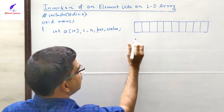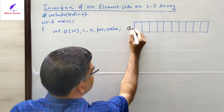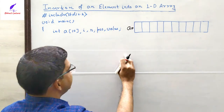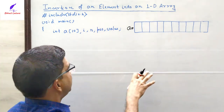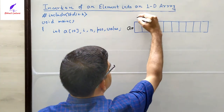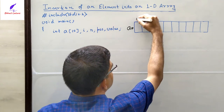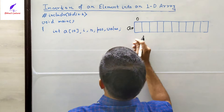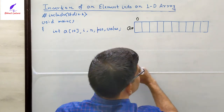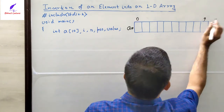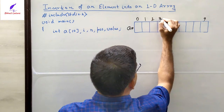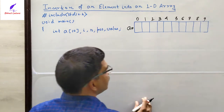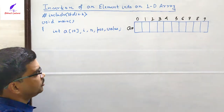Here I have drawn the memory map of this array. The array name is `a` and it has 10 locations, so we can store a maximum of 10 values. The index always starts from 0, as explained in my previous video, so the last index will be 10 minus 1, which is 9 — indices 0, 1, 2, 3, 4, 5, 6, 7, 8, and 9.